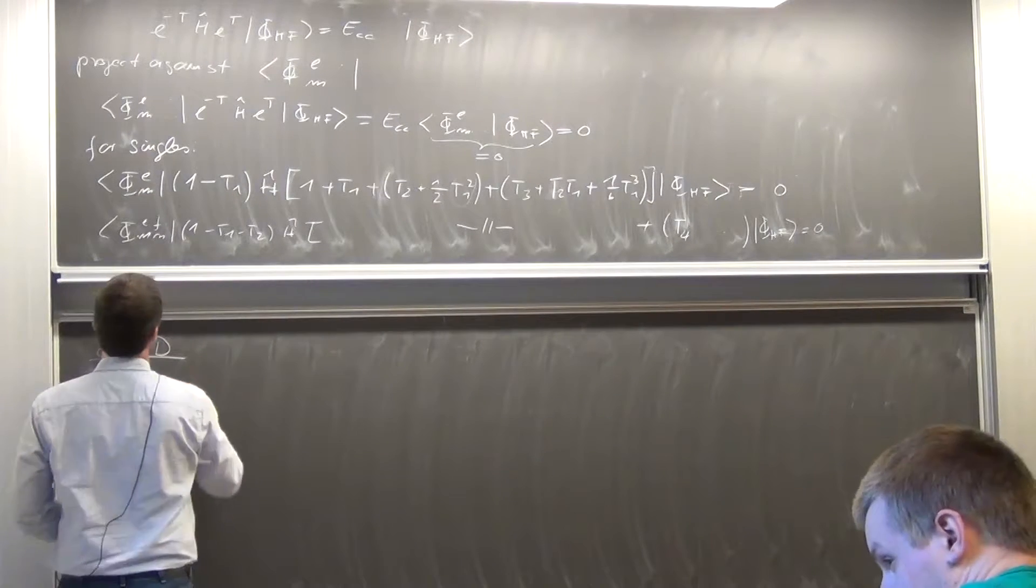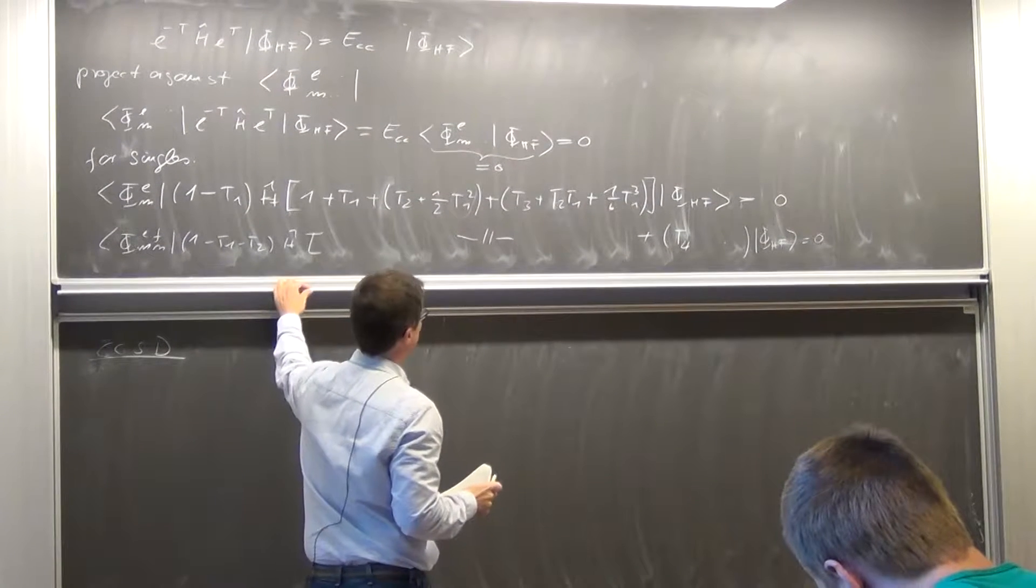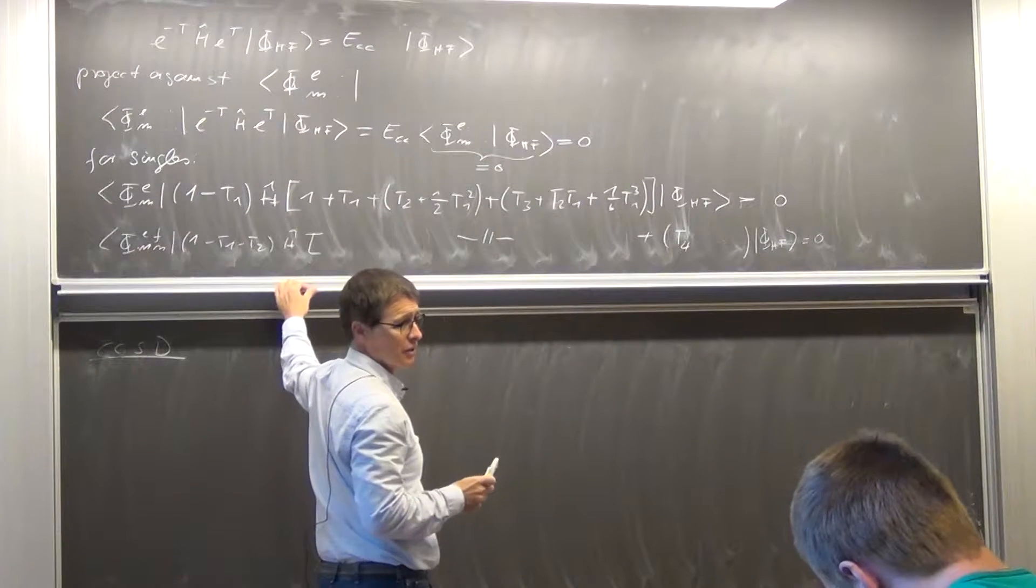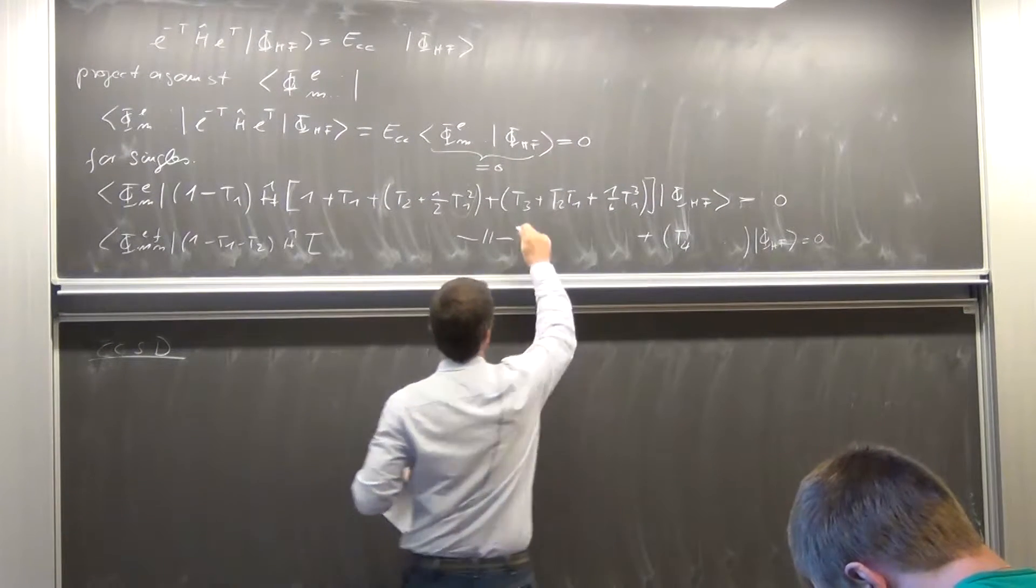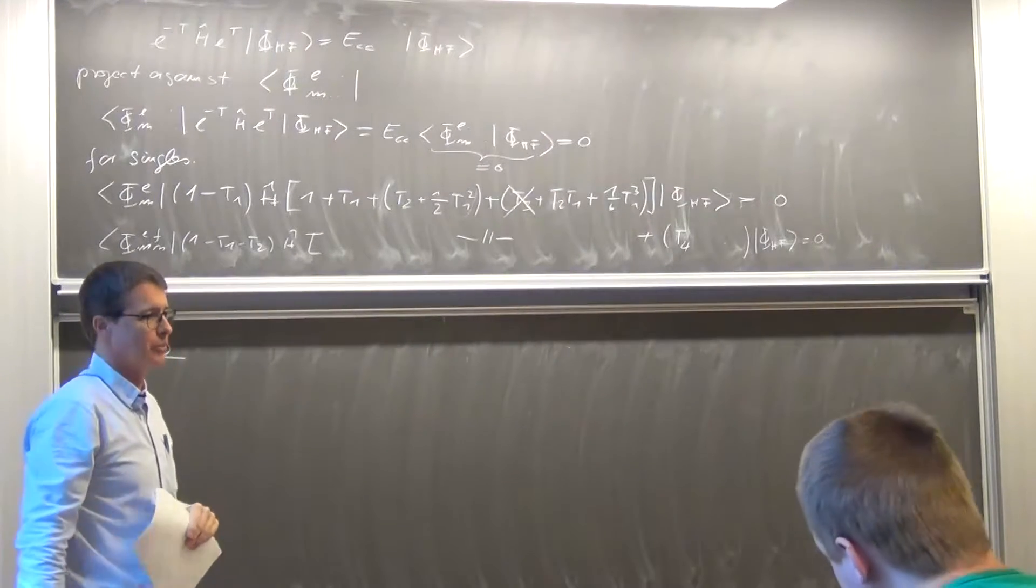Couple classes, singles, doubles, then the only thing I do not have in those equations here is that single term is not there in the CCSD because that's a triple excitation directly.